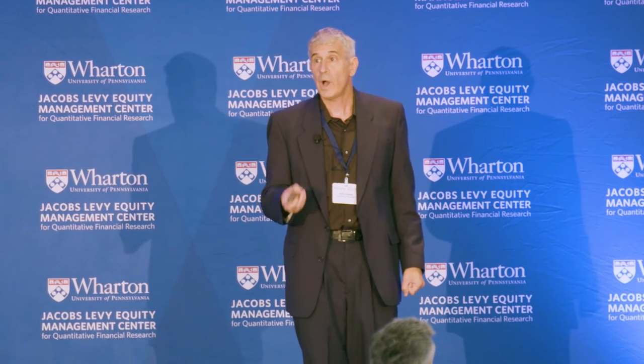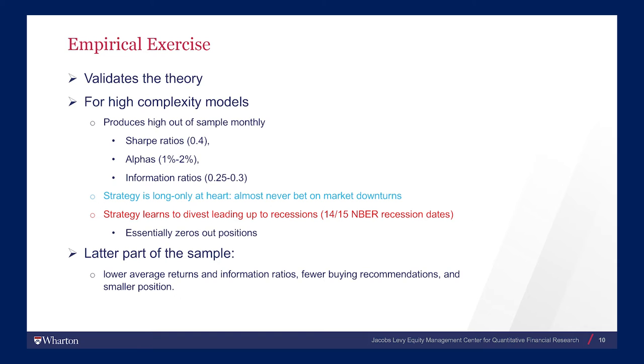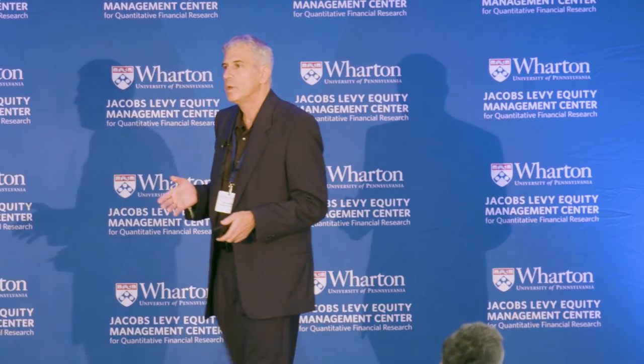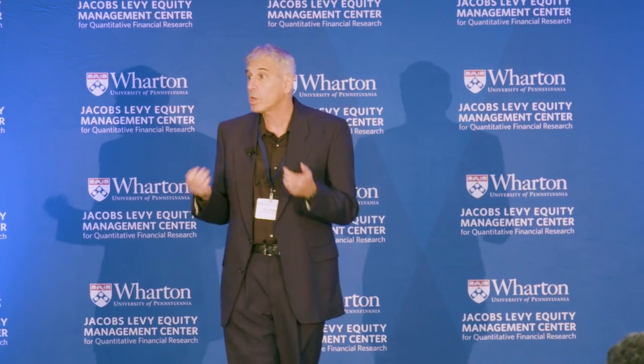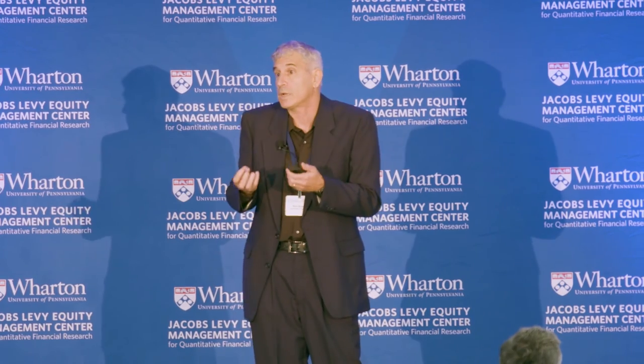They have a very nice empirical exercise validating the results. There are two strong results the authors need to think about in terms of understanding how the model produces this magic. One is that the optimal strategy is almost always a long-only strategy. The other — even more puzzling — is that this machine learning algorithm is able to essentially predict when recessions are coming: 14 out of 15 recessions, the model basically shrinks the trading strategy just before the recession. The paper documents this, and I think the authors need to figure out what in the model is enabling it to pick up these recessions.